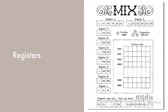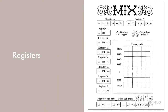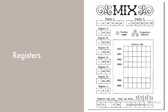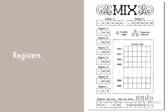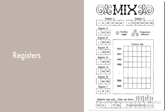Depicted on the right is the overall architecture for MIX. There are 9 registers on MIX. The accumulator or A register contains 5 bytes and a sign. The extension or X register contains 5 bytes and a sign. There are 6 index or I registers that each hold 2 bytes and a sign. The jump or J register holds 2 bytes, and its sign is always plus.